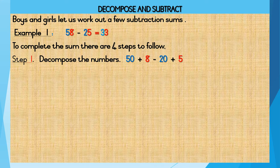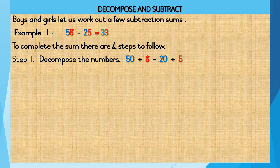Step 1: Decompose the numbers. 58 when decomposed into tens and units is 50 plus 8. 25 when decomposed into tens and units is 20 plus 5. So step 1 will be 50 plus 8 minus 20 plus 5.